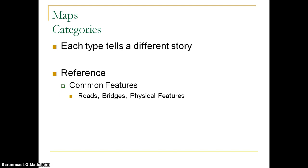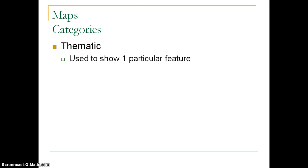The reference map basically just shows you common features of a place so you can find out where things are on the landscape. The thematic map is used to show one particular feature — one particular set of data or information. When the geographer is doing research, the first thing they have to decide is what exactly they want to look at: population, income, how many Canadian geese live in an area, how many people reported sickness — anything you can collect data on can be put into a thematic map.